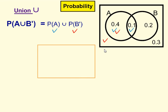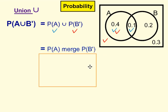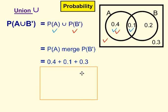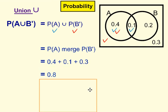So with union, remembering we're merging everywhere with a tick — and you might be thinking, hang on, this is not B, but it doesn't matter because we ticked it as part of the first part. So we're going to add up everywhere that has a tick: 0.4 plus 0.3 plus 0.1, to give us 0.8.